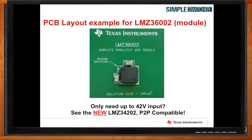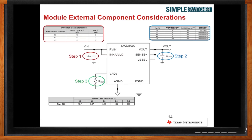I see a couple of capacitors and a resistor, but how do you pick the values for those? Easily. In the data sheet, we include the capacitor values, so it's easy for you to select the input and output values you need without going through Webbench.